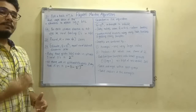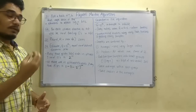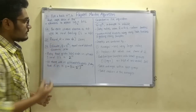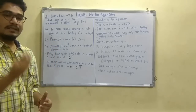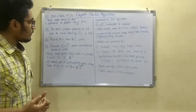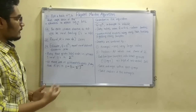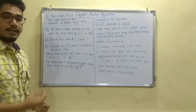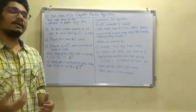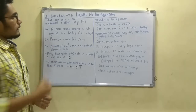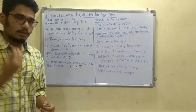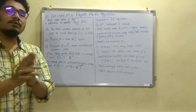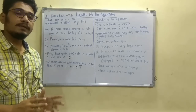Next, based upon this record R, we calculate the estimate. The estimate E is equal to 2 raised to R, and this will finally give the approximate number of distinct elements in that particular stream. These are the four steps of the Flajolet-Martin algorithm.